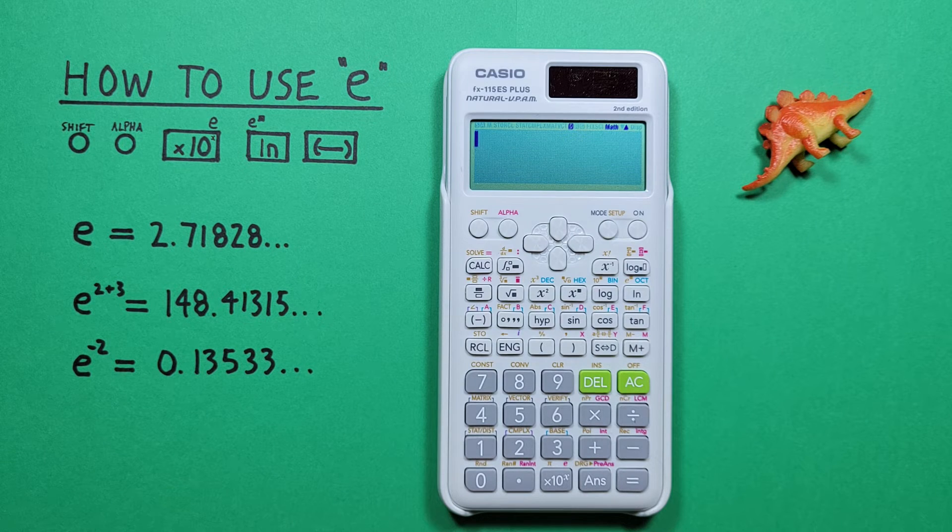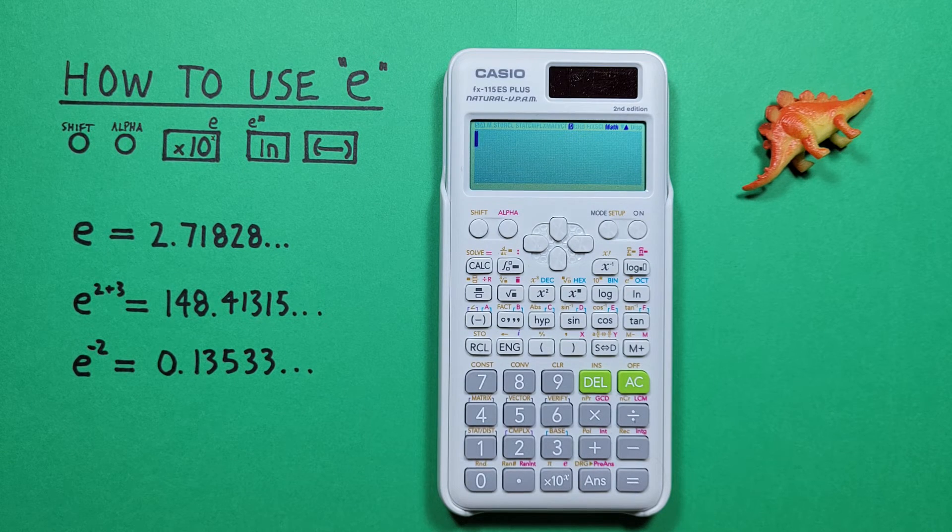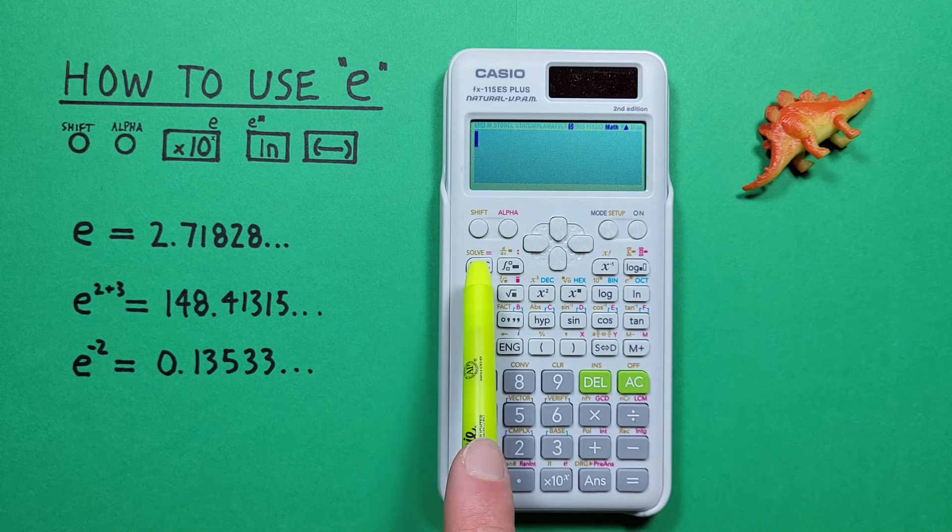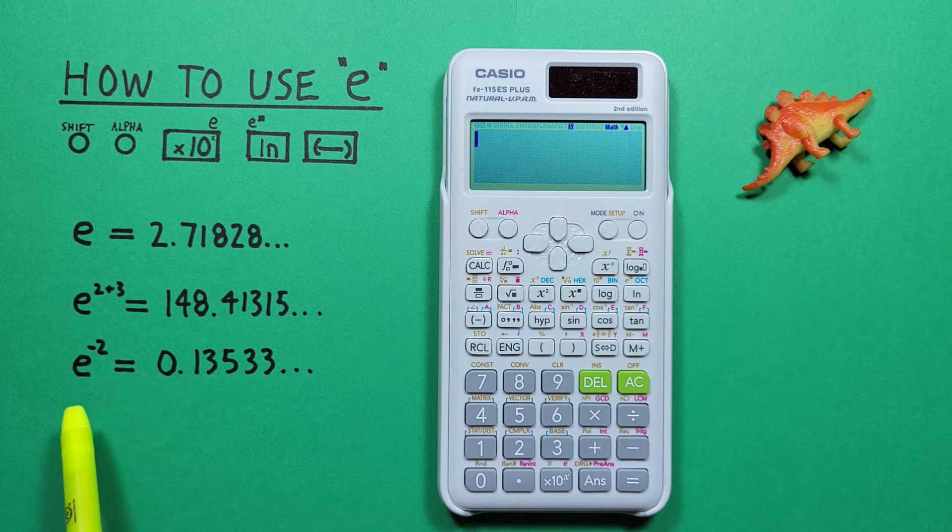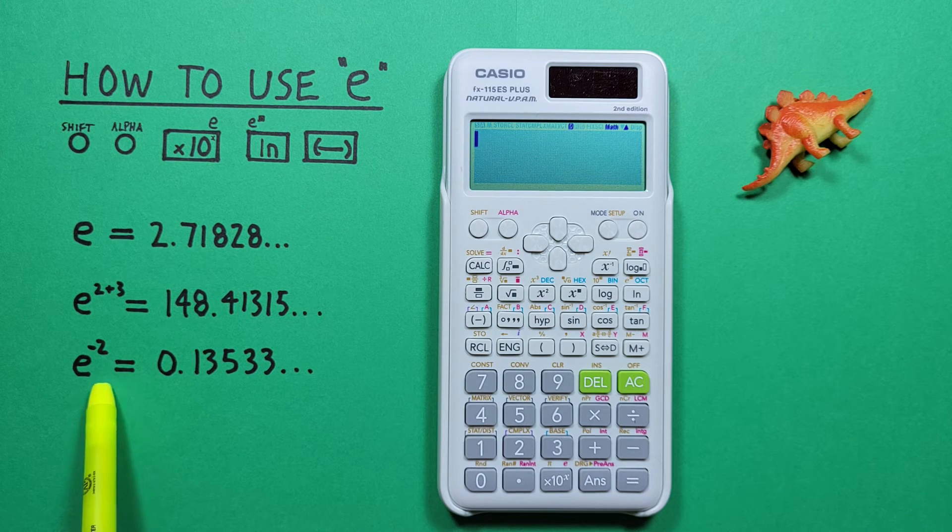One thing to remember is that if we're using these as part of a larger formula, we need to bring our cursor down out of the exponent box before continuing the formula. So let's say we had e to the power of negative 2 plus 1.